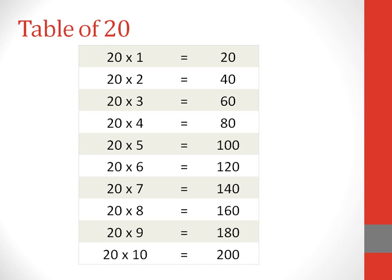Table of 20. 20 ones are 20. 20 twos are 40. 20 threes are 60. 20 fours are 80. 20 fives are 100. 20 sixes are 120. 20 sevens are 140. 20 eights are 160. 20 nines are 180. 20 tens are 200.